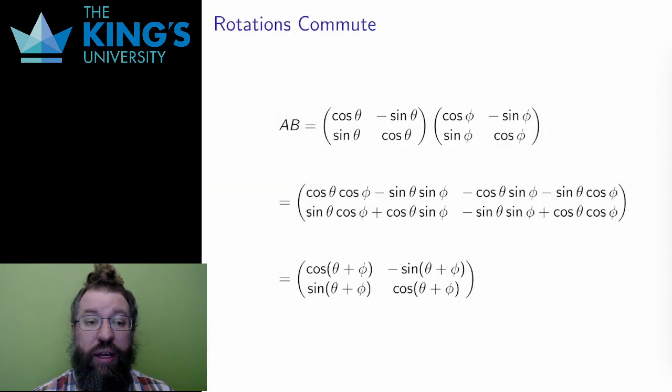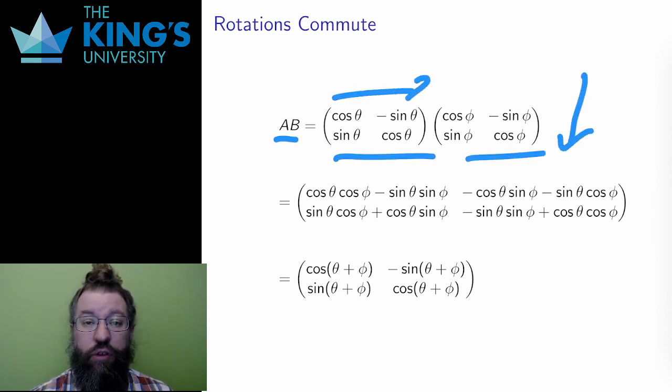So, let me do the calculation. I first calculate the matrix multiplication of AB. I go across the rows of A and down the columns of B. The first entry will be cos theta times cos phi minus sin theta times sin phi. And similarly, I get the other three entries.